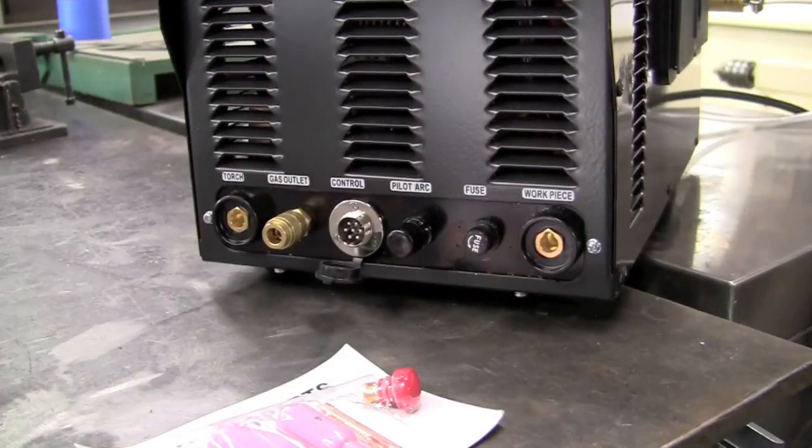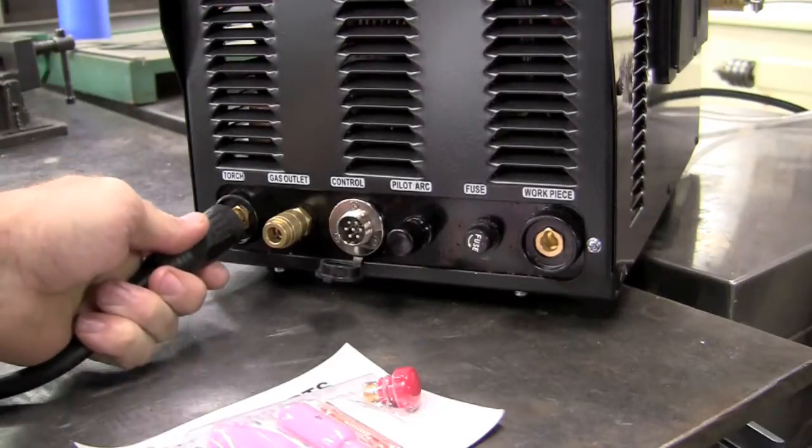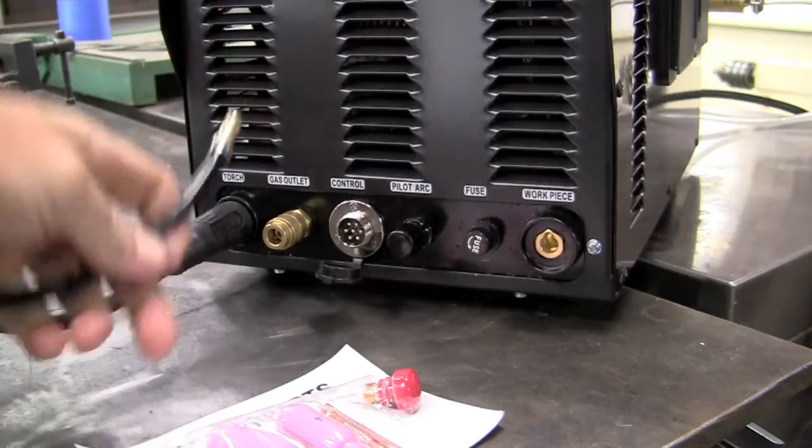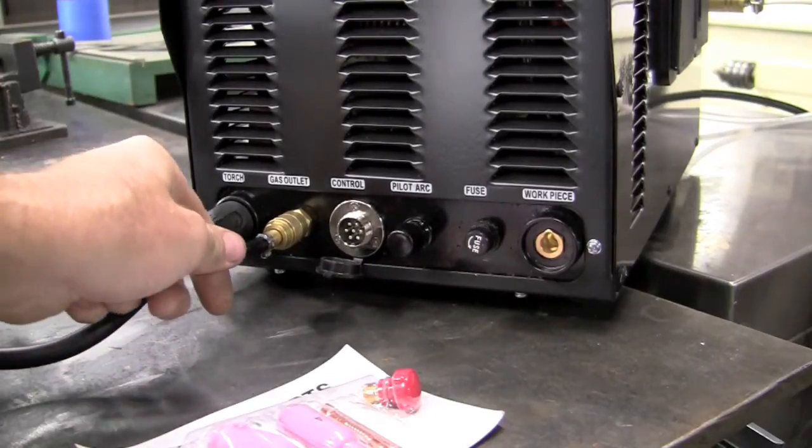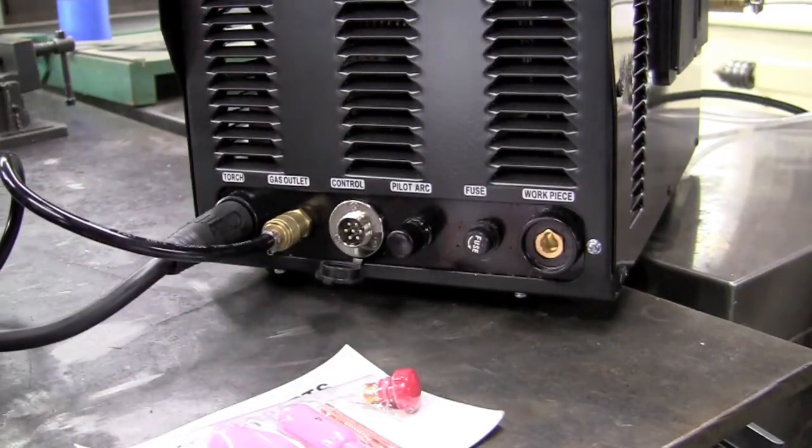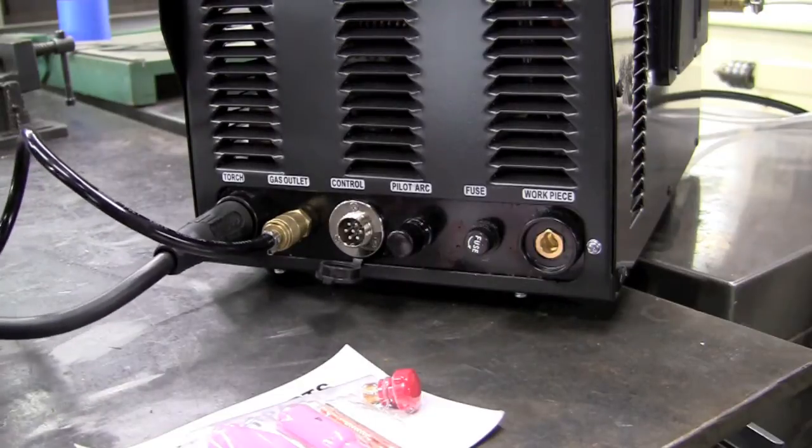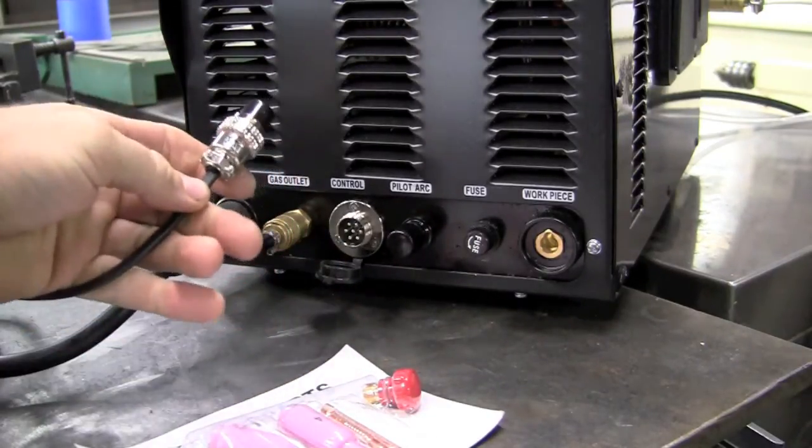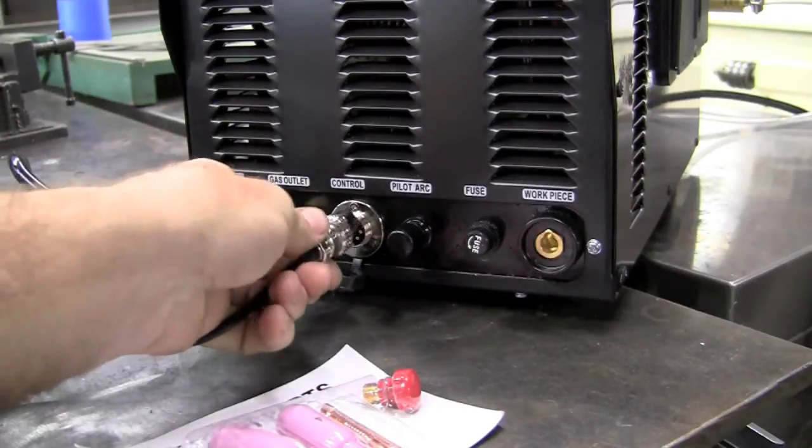Hooking up the torch is a snap. Goes in and twists to our gas outlet. We'll hook this up. It's a quick disconnect, just pushes in. And then if we're going to use our control for 2T mode, which would be on the torch trigger, we would select this.